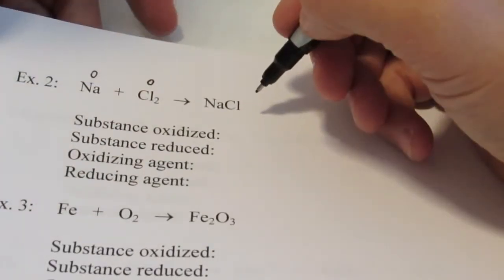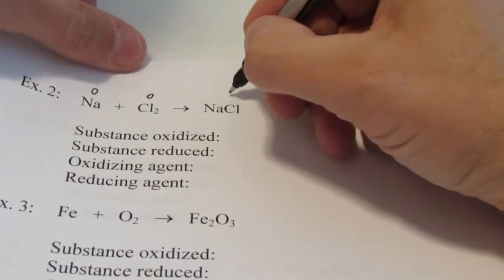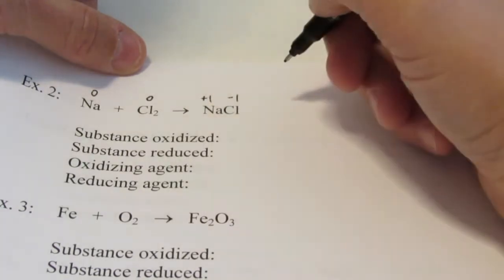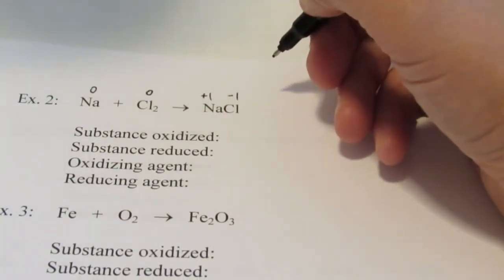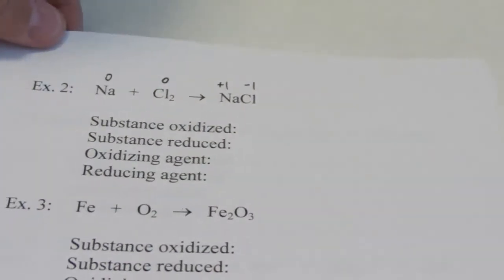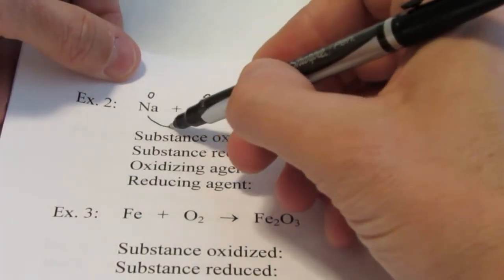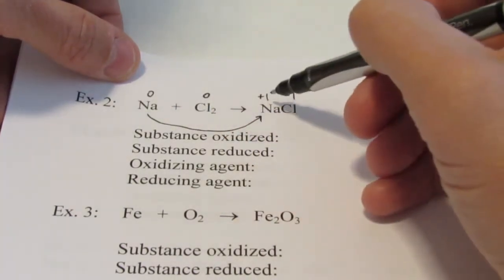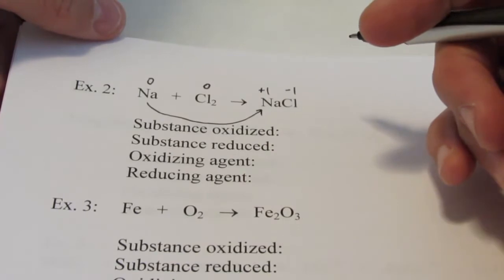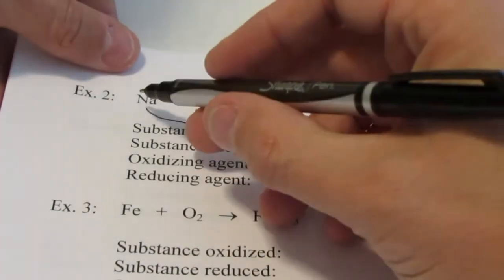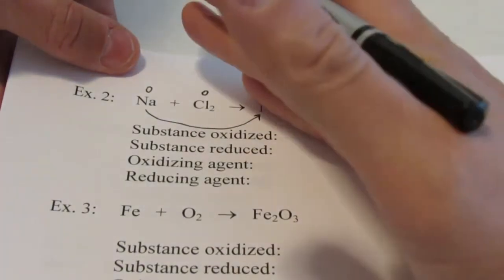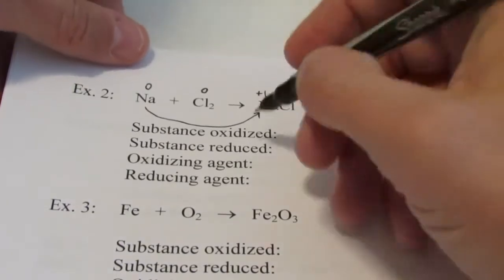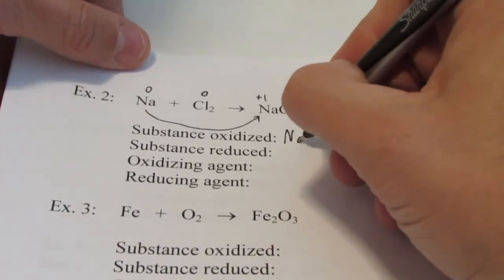In sodium chloride, the most electronegative element of the pair is chlorine, so it will take its charge of negative one, and that would make sodium positive one. The sum of the charges needs to add up to zero. Sodium went from zero to positive one — to go from zero to positive one you lose electrons. Sodium lost one electron. Losing electrons is oxidation — remember, LEO the lion goes GER. So the substance oxidized was sodium.